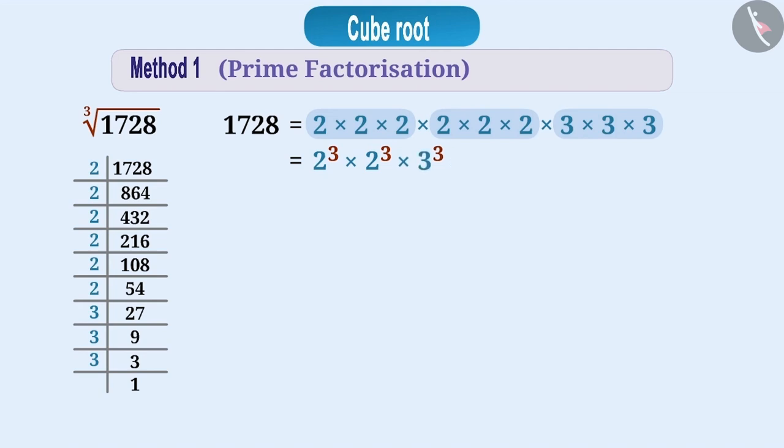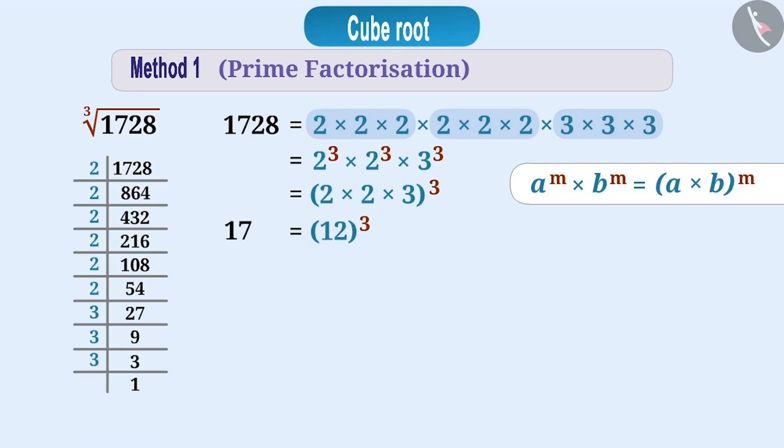One rule in the law of exponents is that a to the power m into b to the power m is equal to a into b whole to the power m. Using this rule, we can write this multiplication of factors as 2 into 2 into 3 whole cube, which would mean 12 cube. That is, 12 cube is equal to 1728. Or, we can say that the cube root of 1728 is 12.